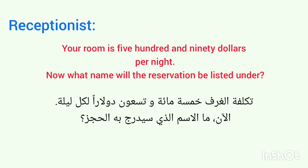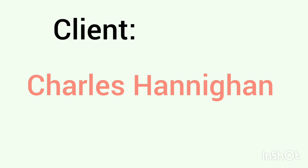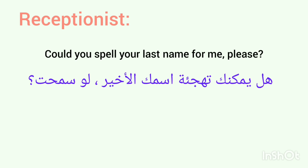Your room is $590 per night. تكلفة الغرفة هي $590 في كل ليلة. Now, what name will the reservation be listed under? الآن ما هو الاسم الذي سيتم إدراج الحجز به؟ Charles Hannigan. الاسم هو Charles Hannigan. Could you spell your last name for me please? هل يمكنك أن تهجئ اسمك الأخير؟ يقول بالتأكيد ويهجئ الاسم: H-A-N-N-I-G-H-A-N.